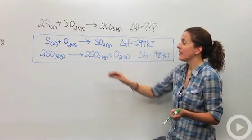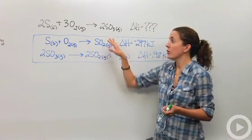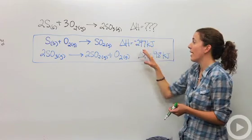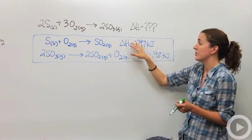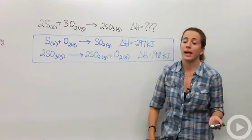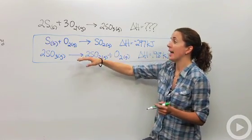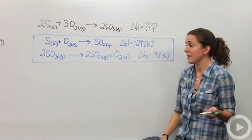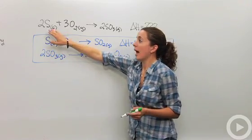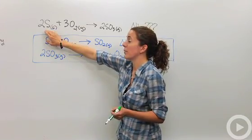Well, Hess's law says that I can manipulate these reactions in order to get this overall reaction, and that way I can figure out my delta H if I add up the two H's. So first I have to make sure that I have these reactions actually do add up to the final reaction. So let's look at this first thing. I need two sulfurs on my reactant side.